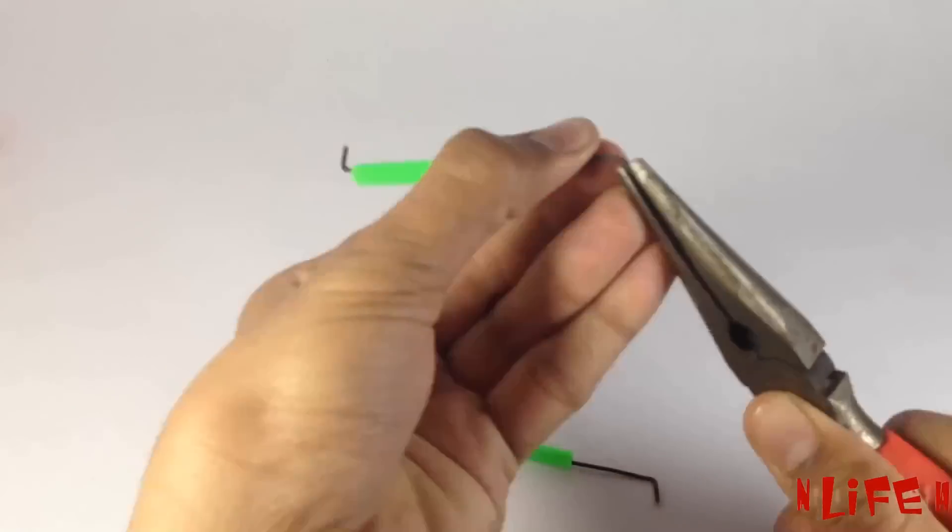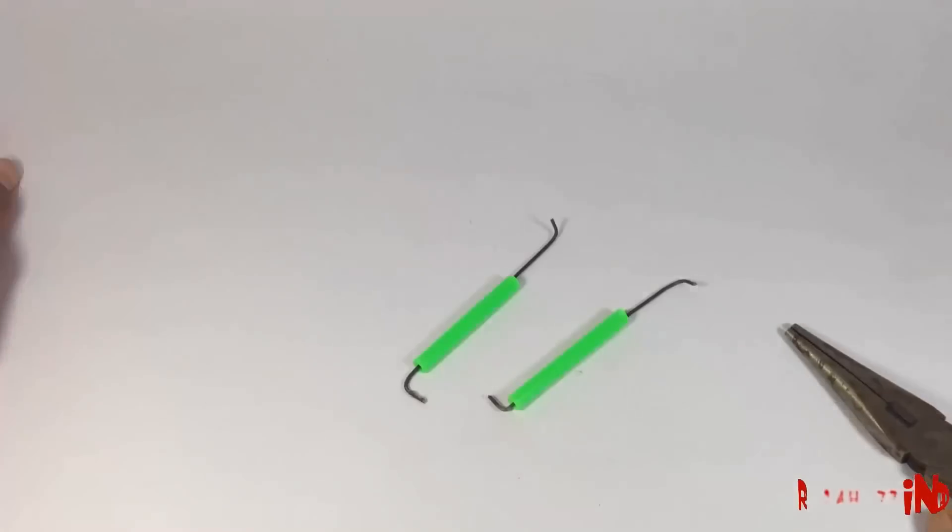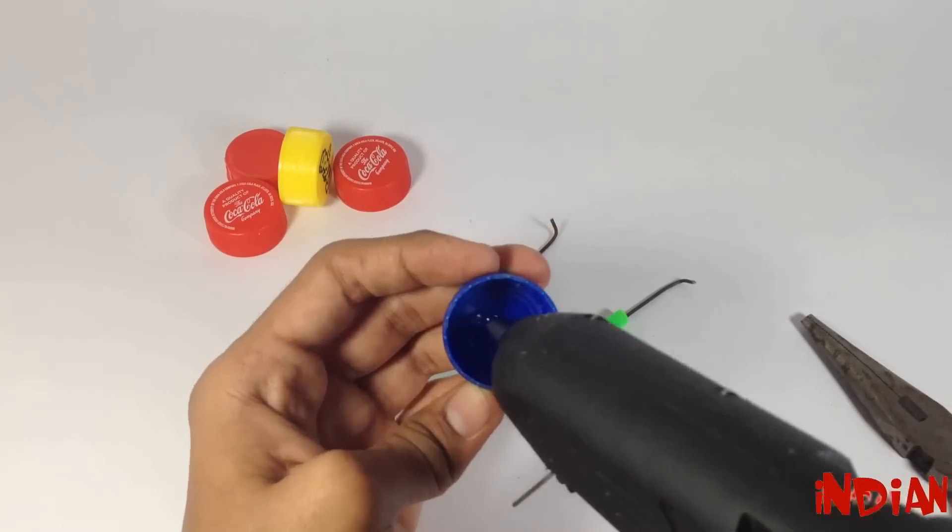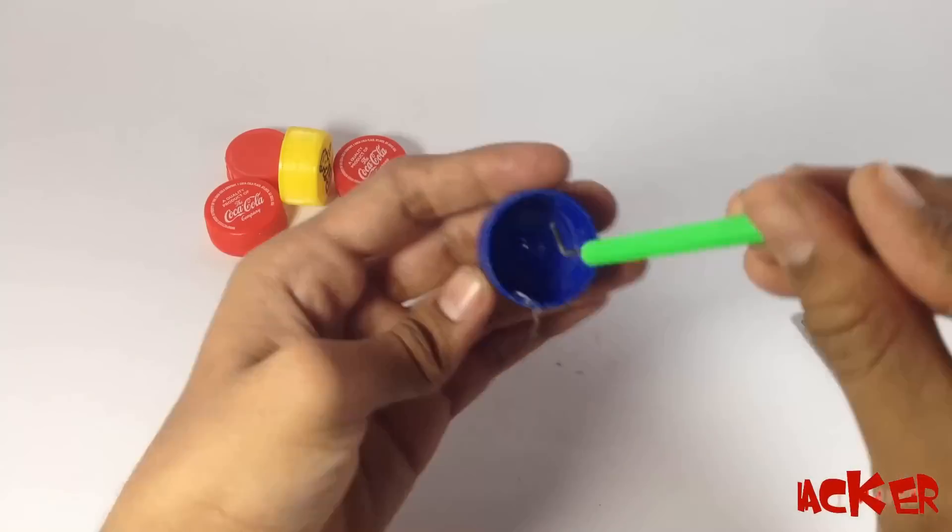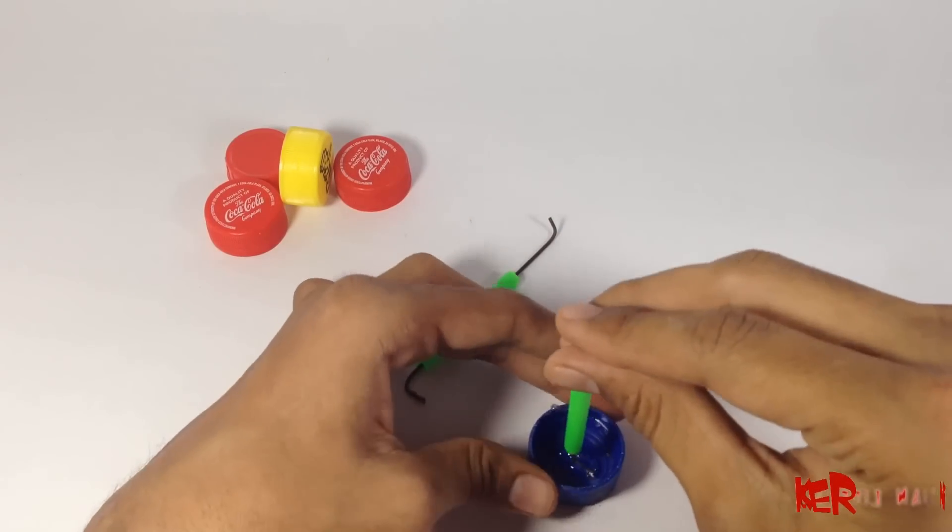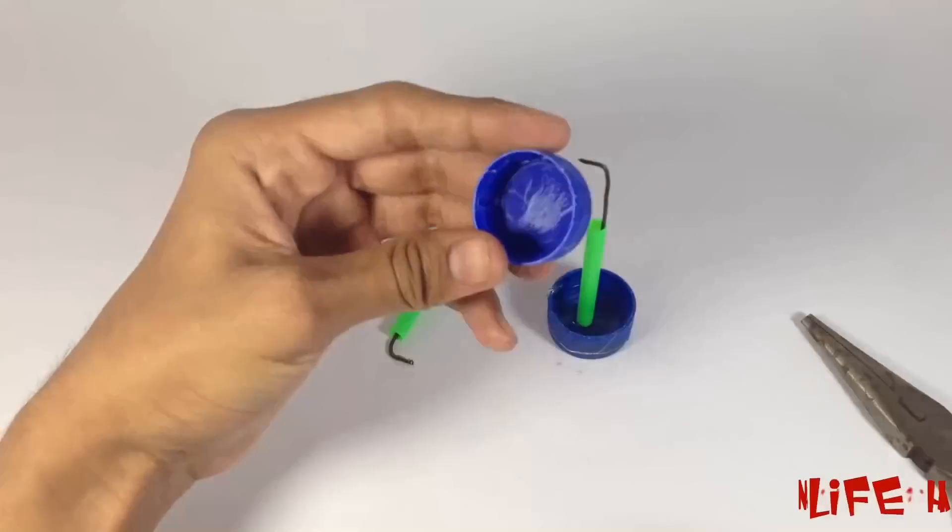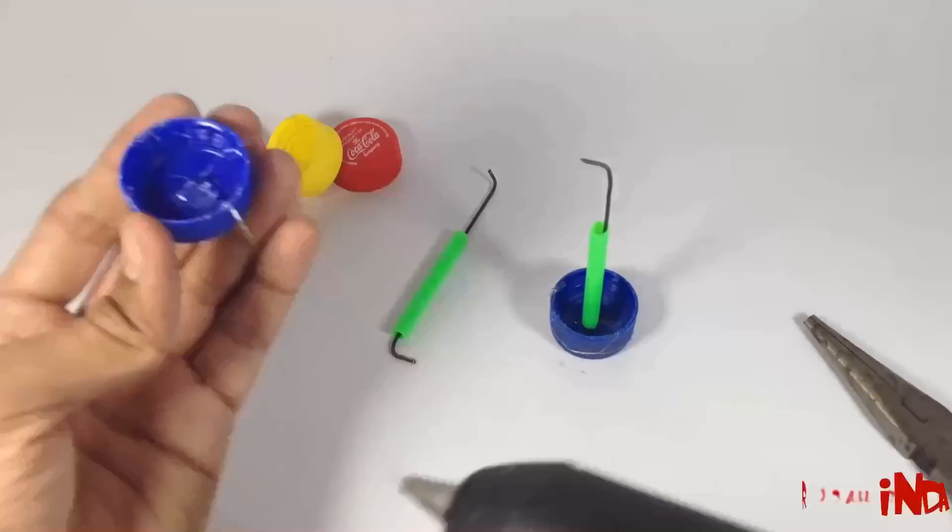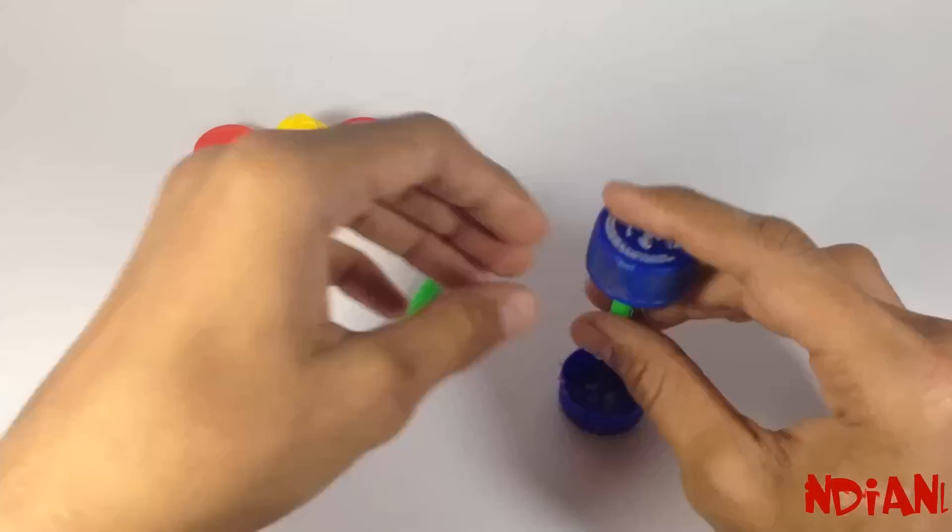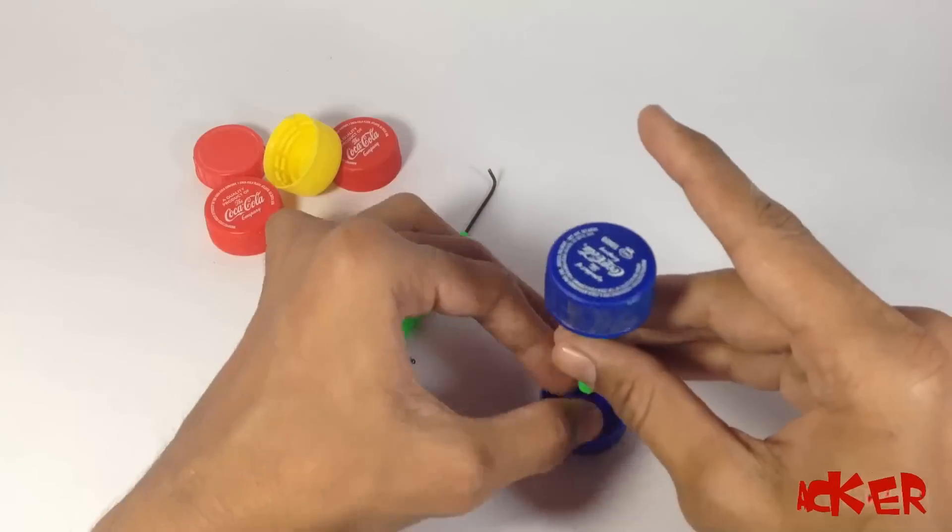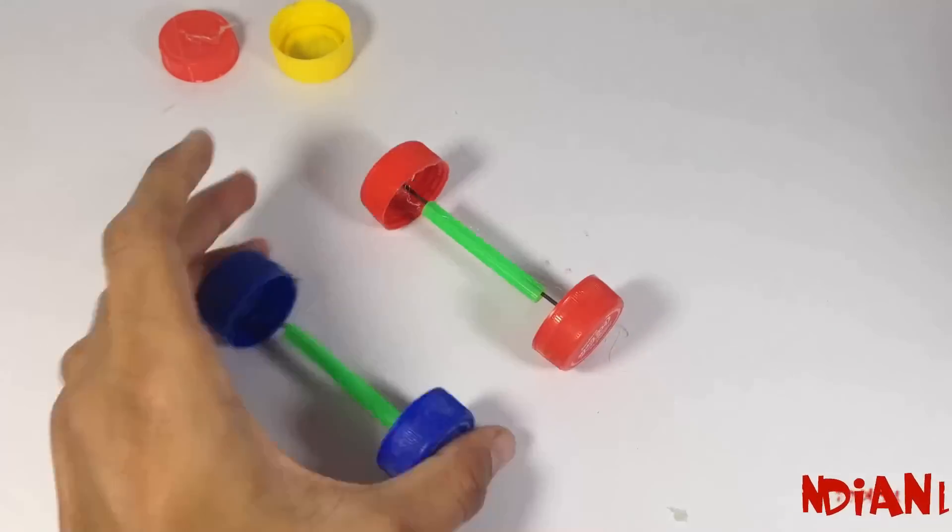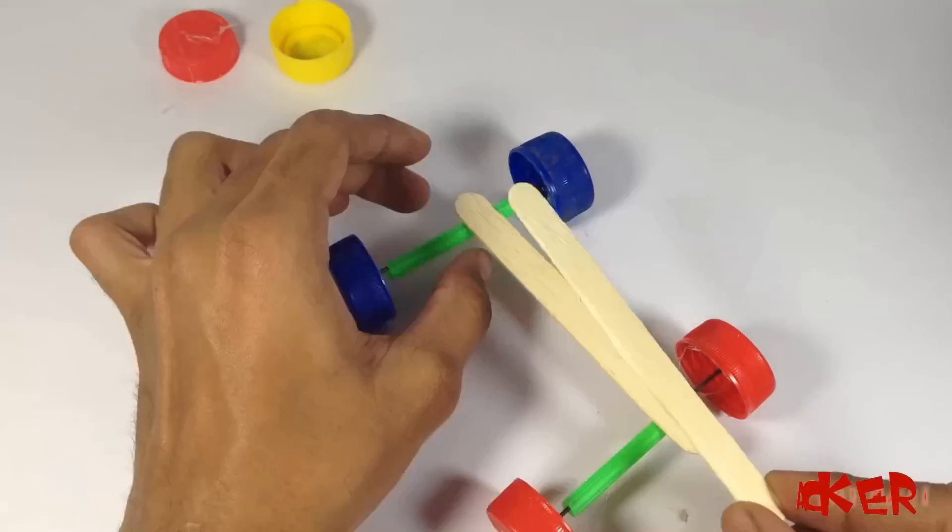Now fix the wire in the center of the bottle cap. And do the same with another one. Now all the tires are ready.